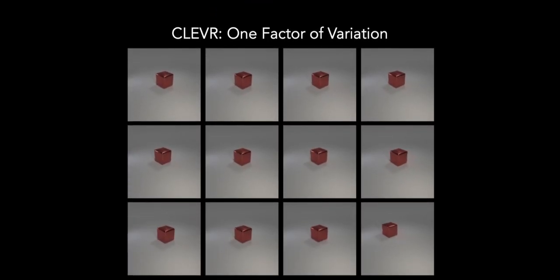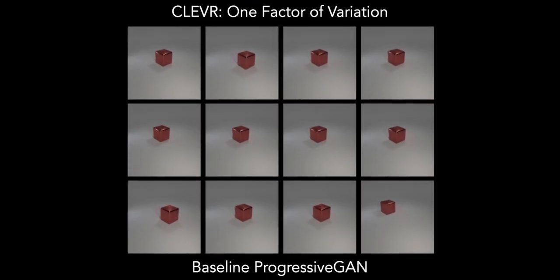Let's see what happens in practice with baseline progressive GAN. As an extreme case, we create a variant of Clever that has only one factor of variation positioned along a diagonal axis. Visually, baseline progressive GAN uses all 12 z-components to model the data. Let's see if we can come up with a really easy way to quantify this concept.